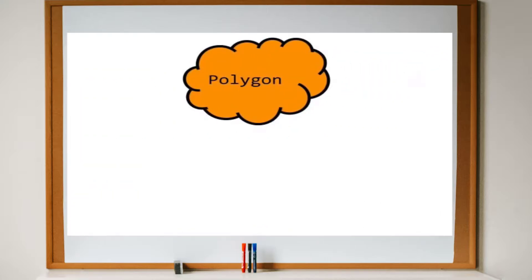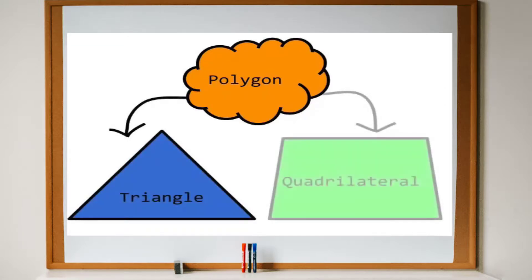In our example, polygon is an abstract class. Therefore, we cannot create polygon objects. What we can do is create objects of its derived classes, triangle and quadrilateral.